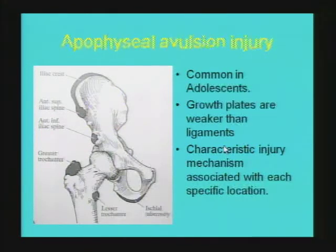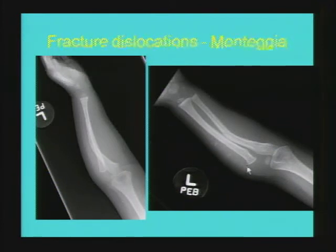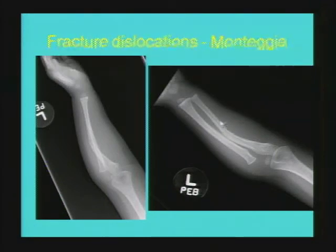There is always a characteristic injury mechanism associated with specific types of avulsion injuries depending on the muscle and ligament group involved. Among fracture-dislocation combinations, this is a case of Monteggia fracture with dislocation of the radiocapitellar joint. The Monteggia pattern involves fracture of the proximal or mid one-third of the ulna with dislocation of the radiocapitellar joint. The Galeazzi fracture-dislocation combination involves the distal radius with disruption of the distal radioulnar joint.